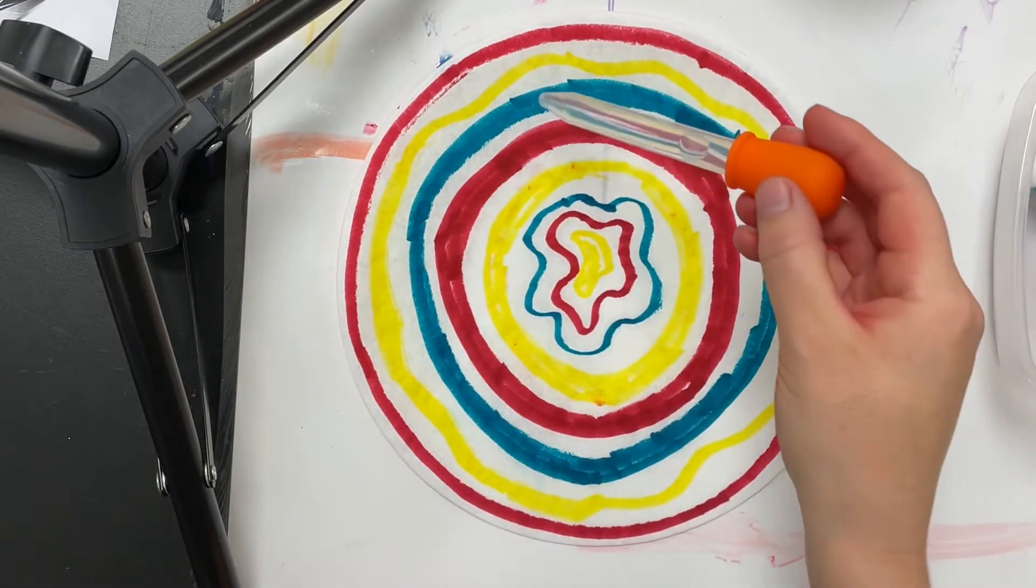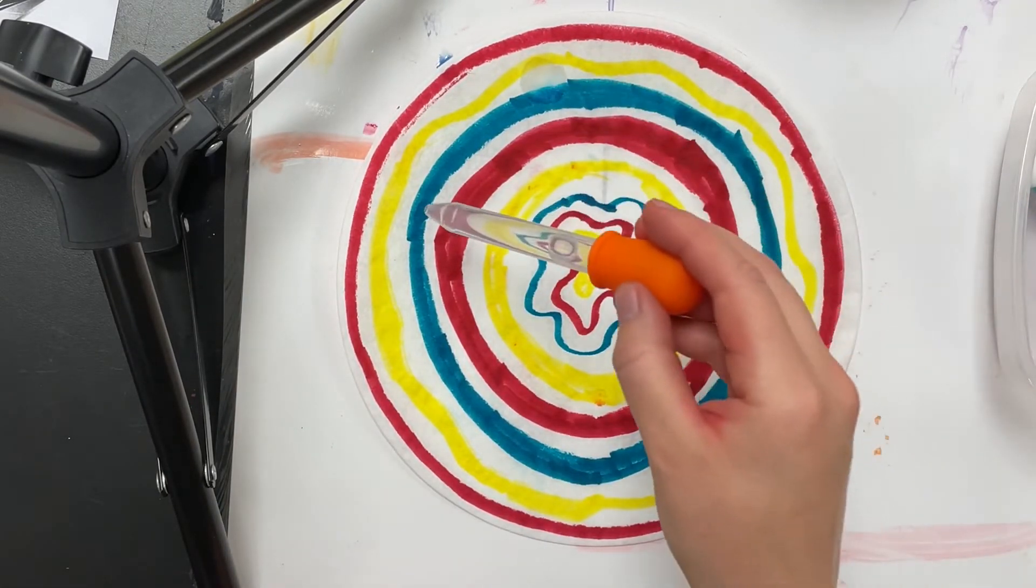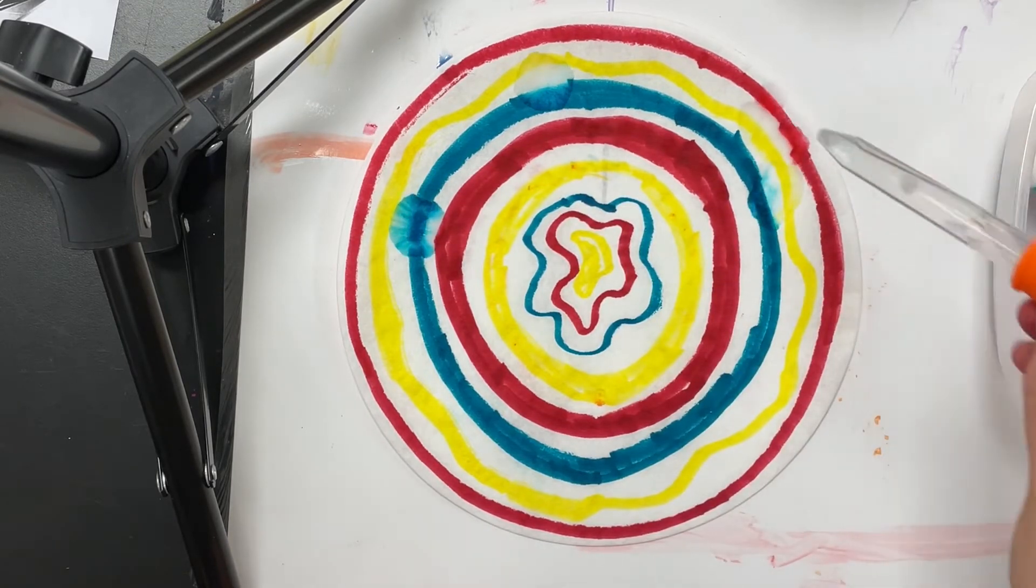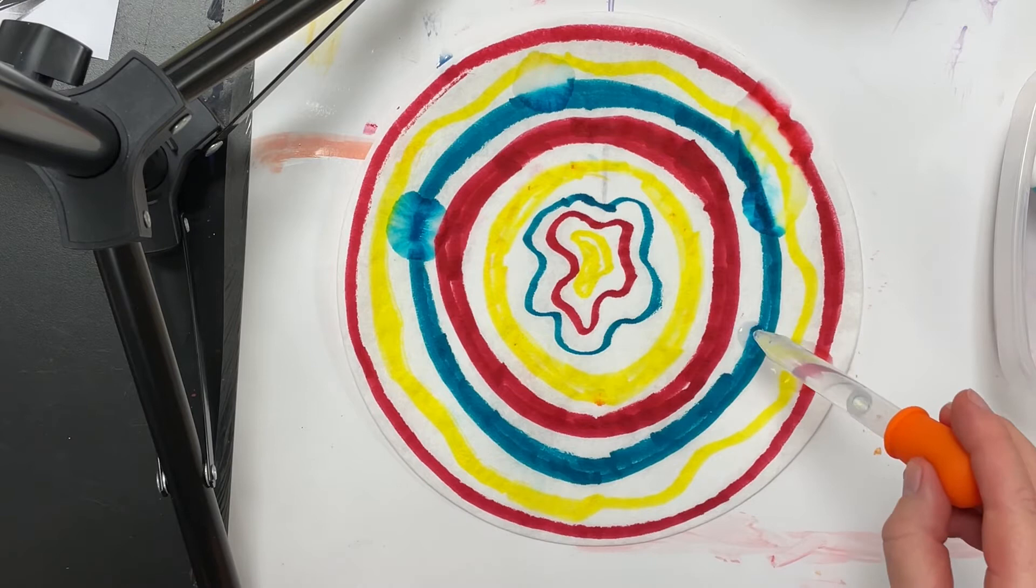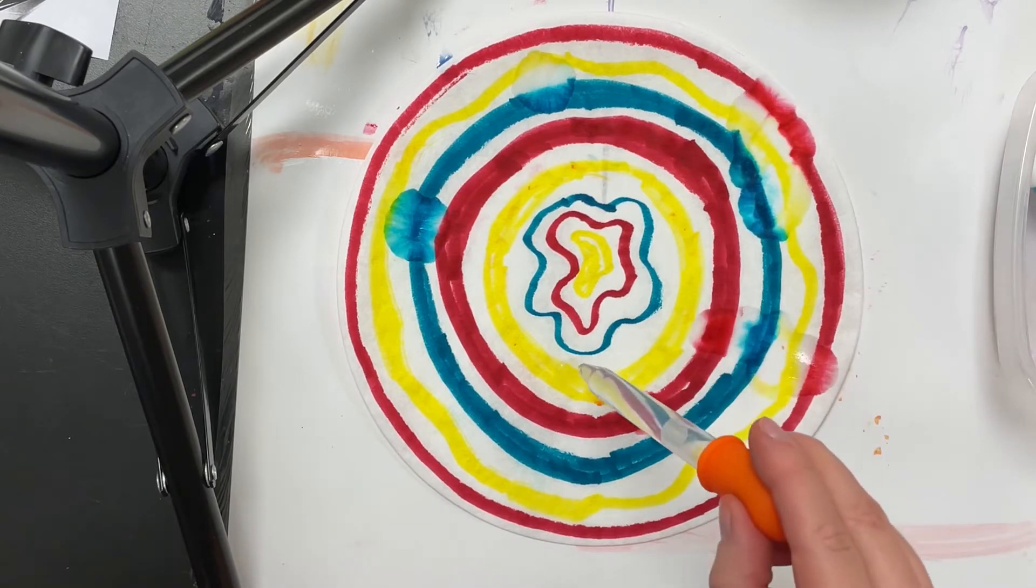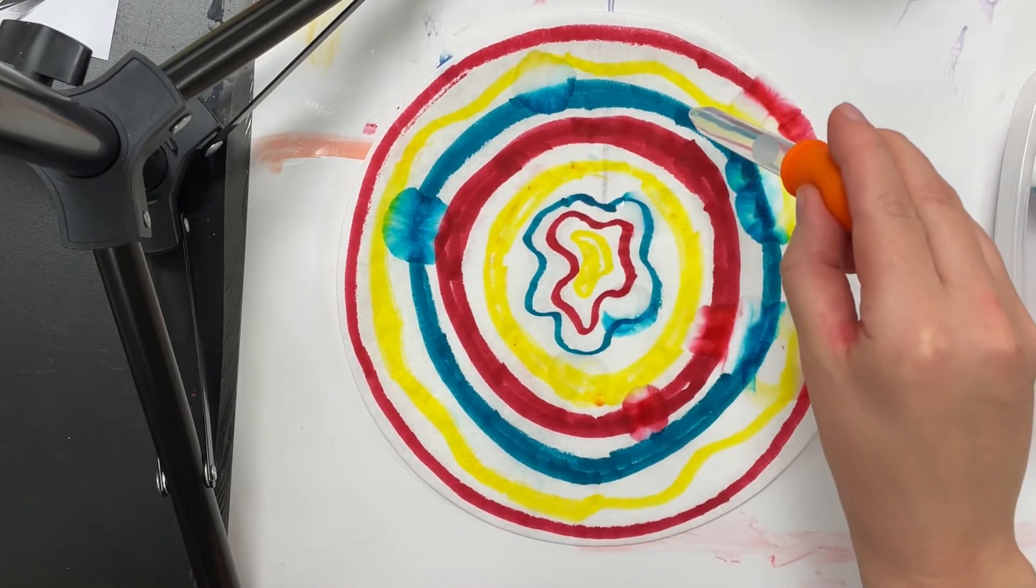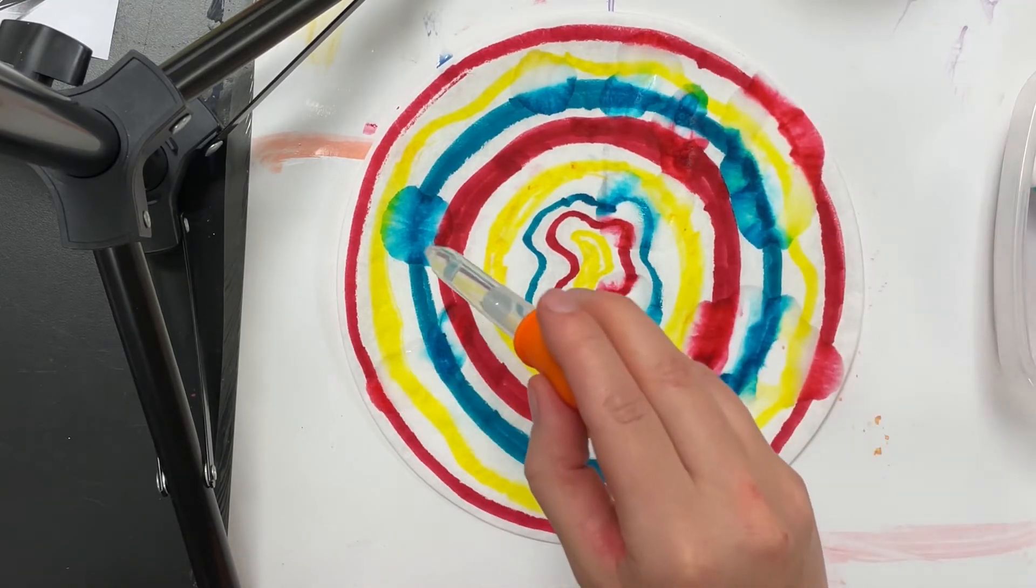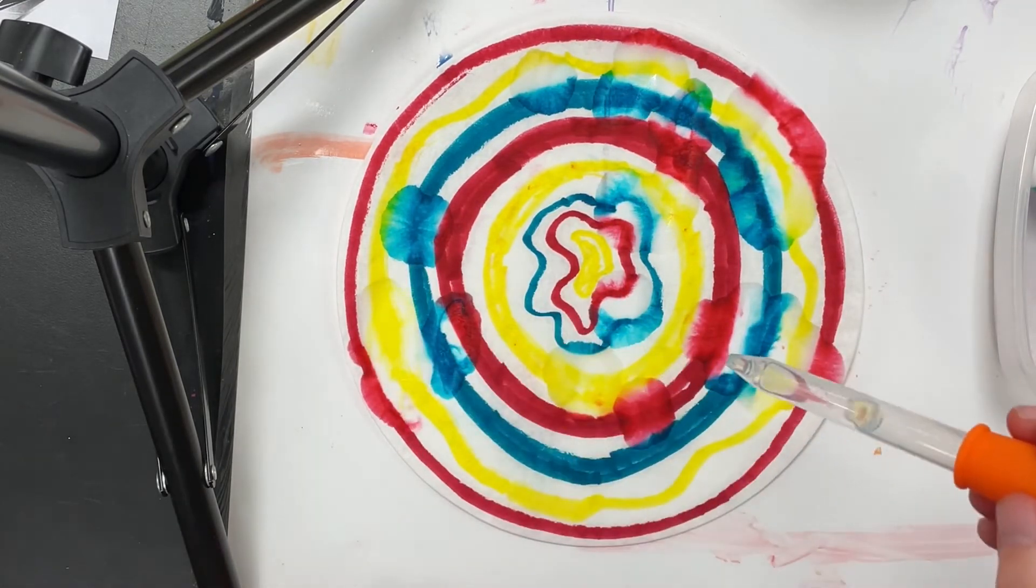Then you'll squeeze the rubber part to drop water gently and slowly onto your circle. I'm dropping gently and slowly because I don't want to create a big puddle of water on my work of art. I want little drops of water everywhere.